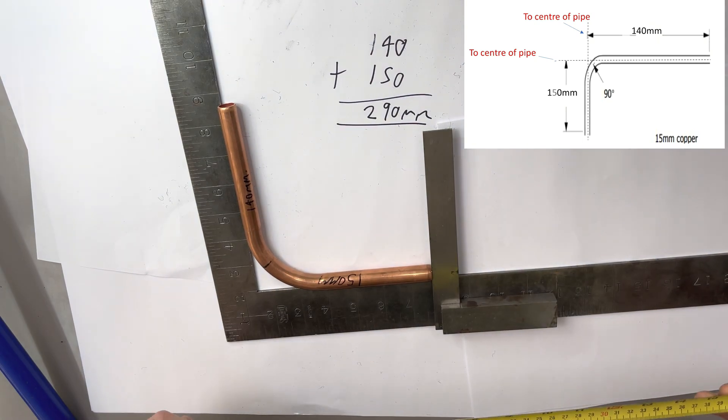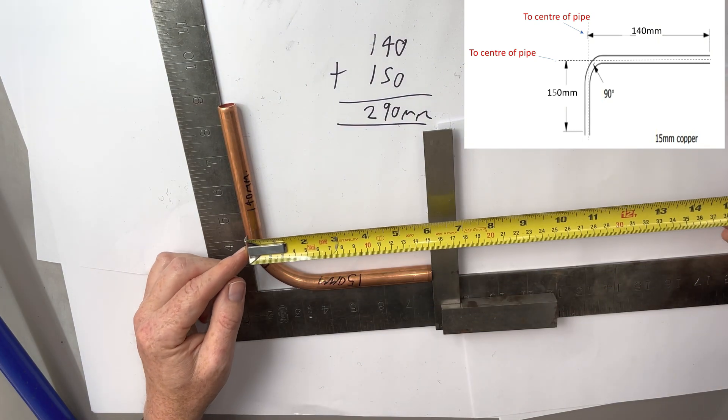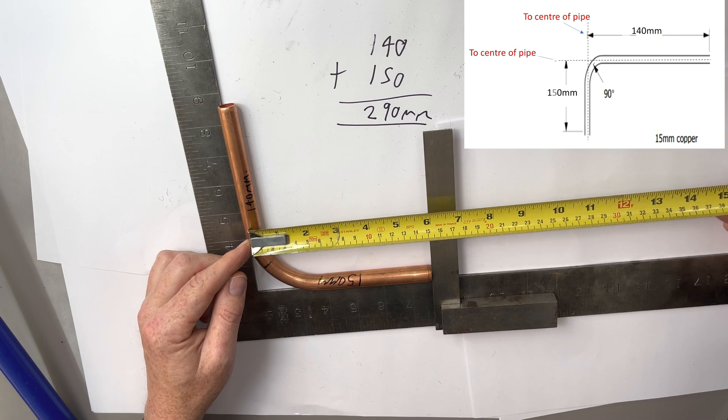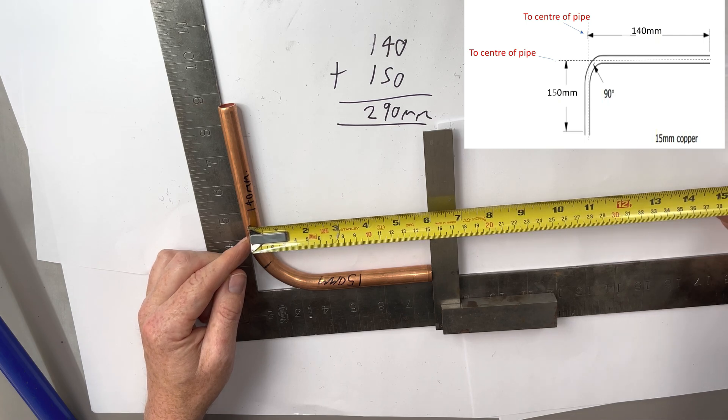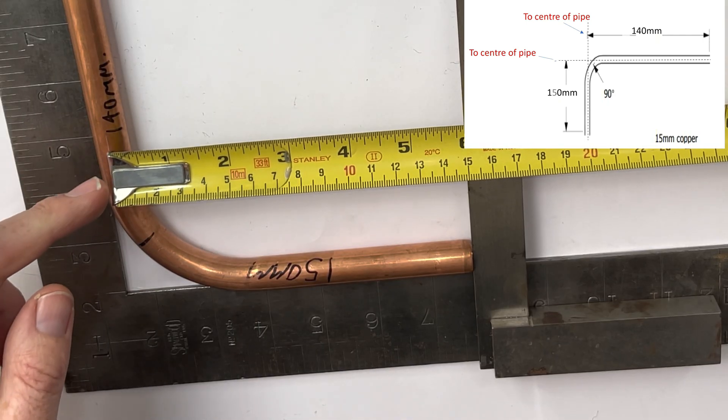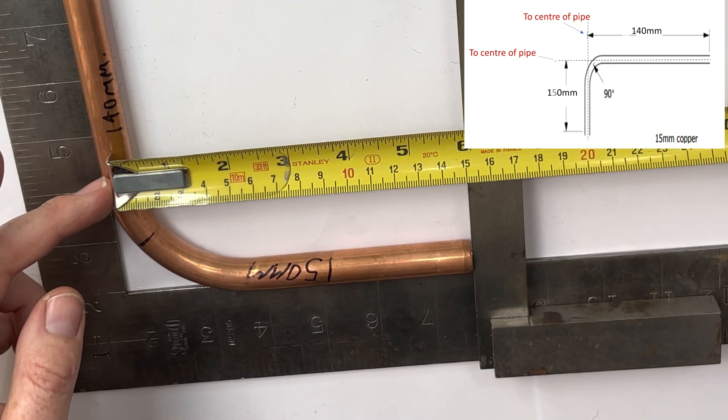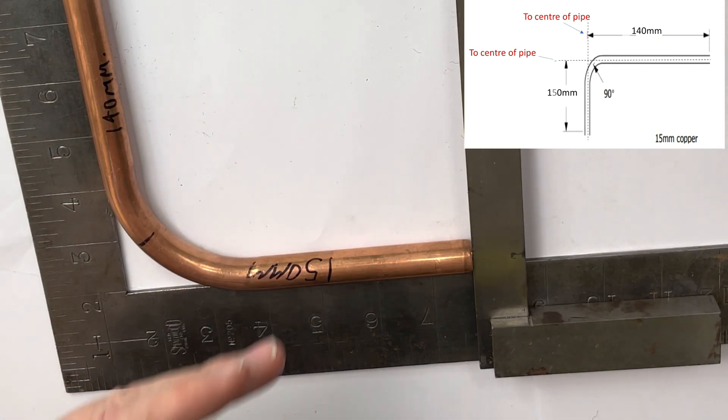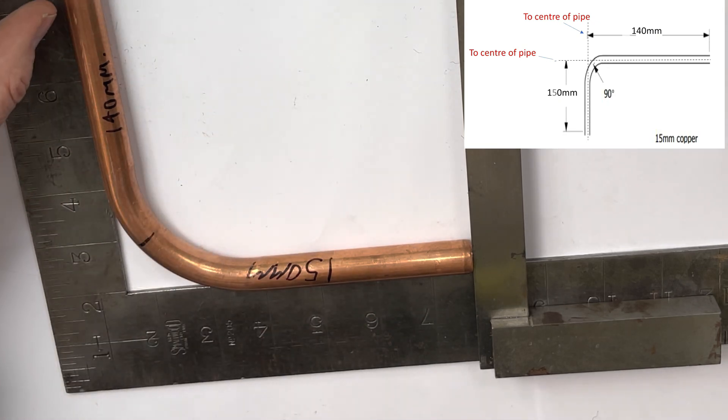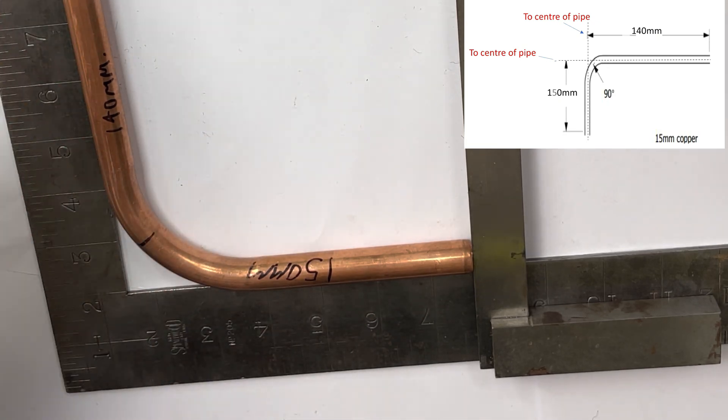Okay so let's just check our measurements. 150 mm from the end to the centre of this pipe. That correlates. When we check this end, this is where the pipe has gained length. Let me show you.